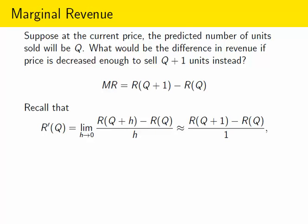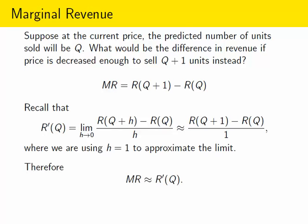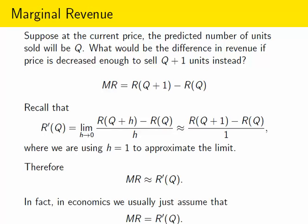So therefore, since that right-hand side is an approximation for R prime, marginal revenue must be an approximation for R prime, or usually we think of it the other way. We think of the derivative of R, the derivative of the revenue function, as giving us a way to approximate the marginal revenue. And in fact, we usually just assume that these two things are exactly the same, that it's not merely an approximation. This makes a lot of our calculations easier, and in practice it's a pretty good approximation, so we'll use it as if it's the exact value.